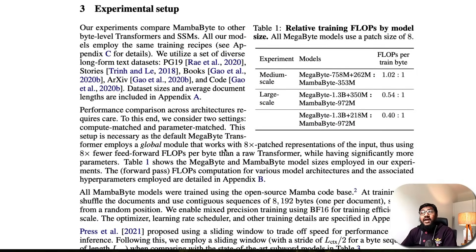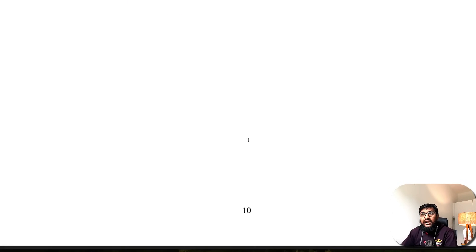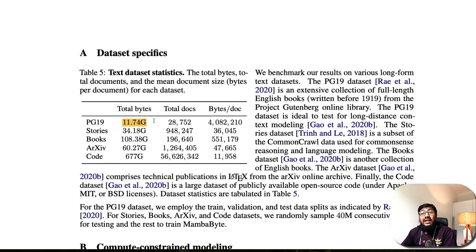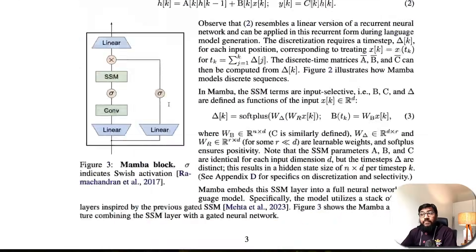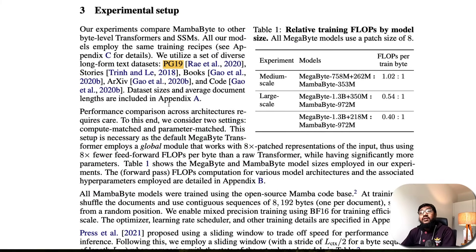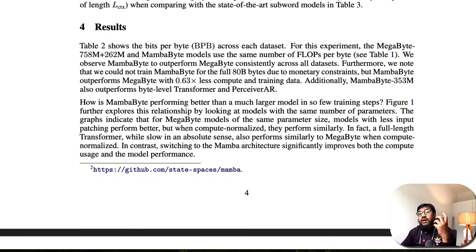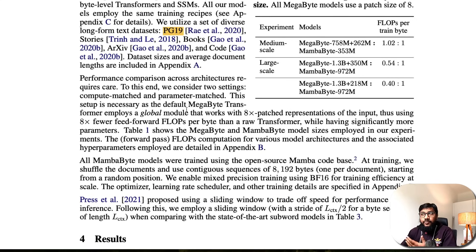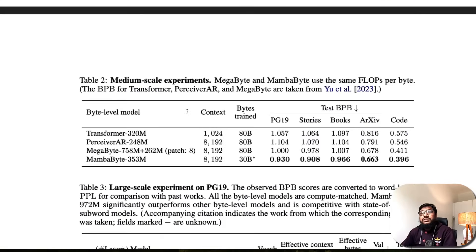The experimental setup uses a dataset called PG19. PG19 has 11.74 GB total, covering total bytes and bytes per document. It's based on English books from Project Gutenberg and other sources available for text modeling. From this dataset, they trained MambaByte using the same Mamba architecture we've been discussing, with a context length of 8192.